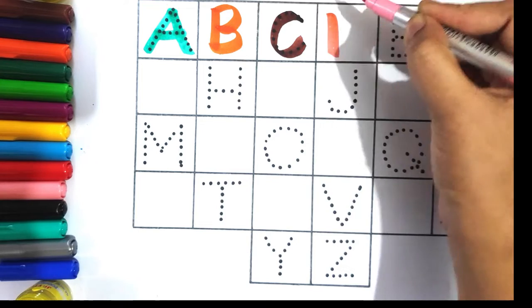Brown color U, U for umbrella. Light pink color V, V for van.